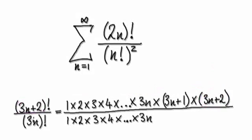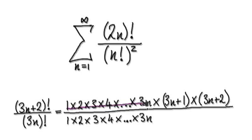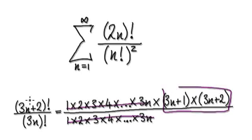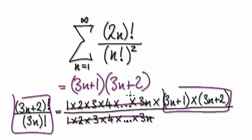So 3n+2 is your very last one. If you have 3n factorial, it means all the way up to 3n. And if you have one thing divided by another, they will cancel out easily, so all that you're left with is 3n+1 times 3n+2.